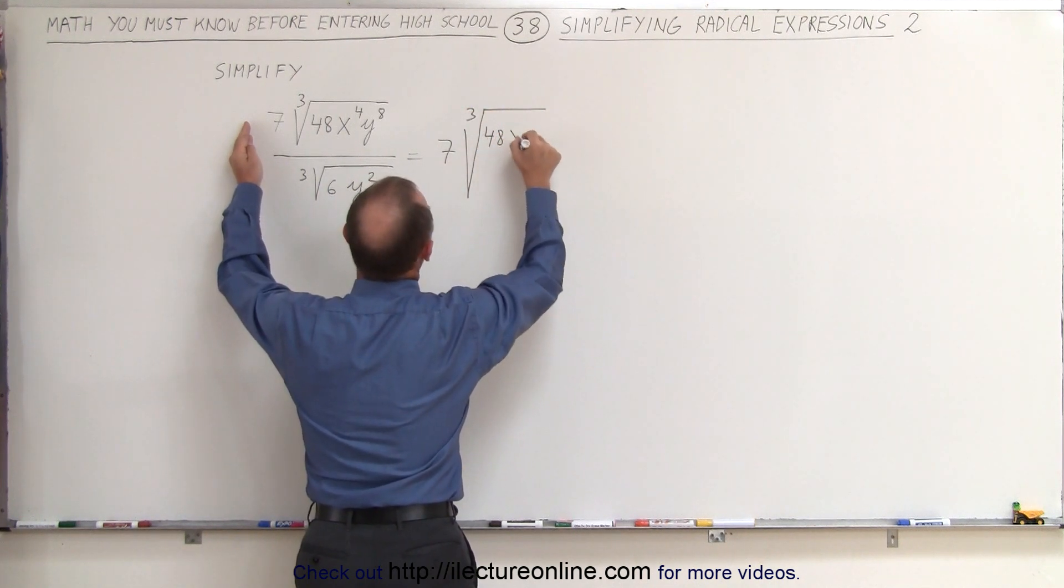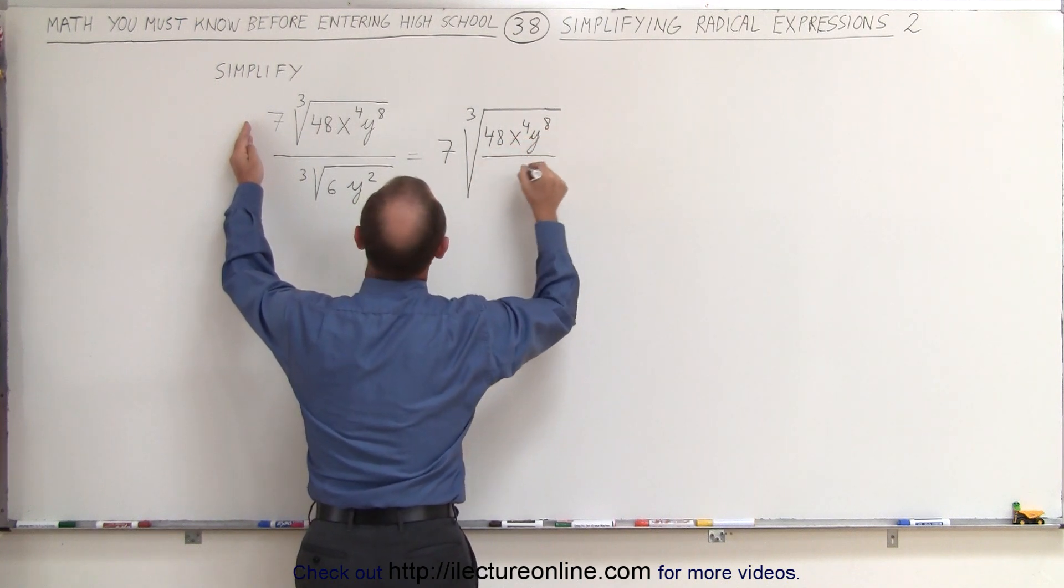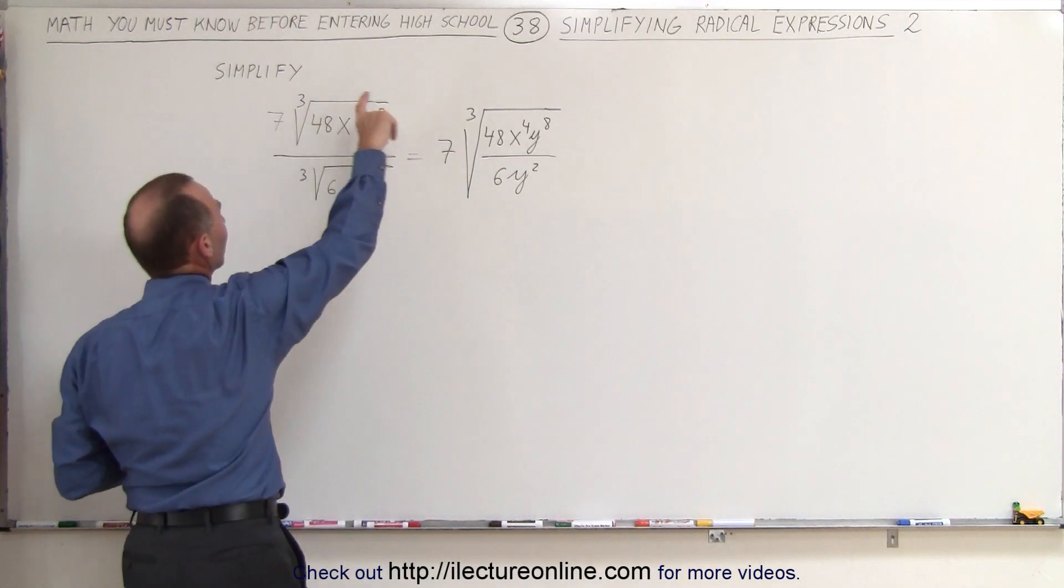times the cube root of the numerator. We have 48, x to the 4th, y to the 8th, divided by 6y squared. So we put it all under a single radical. We can do that because the root is the same.